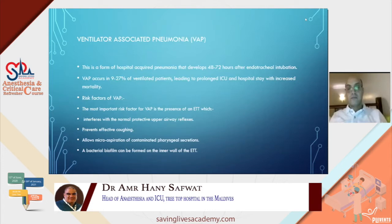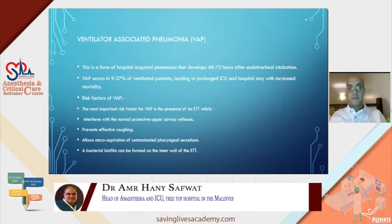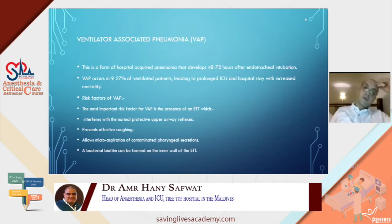The infection we are most attached to is ventilator associated pneumonia. VAP is a form of hospital acquired pneumonia which develops 48 to 72 hours after endotracheal intubation. Some centers now call it intubation-associated pneumonia due to the very close relation between endotracheal intubation and VAP. VAP occurs in 9 to 27 percent of ventilated patients according to American statistics, leading to prolonged ICU stay and increased mortality.